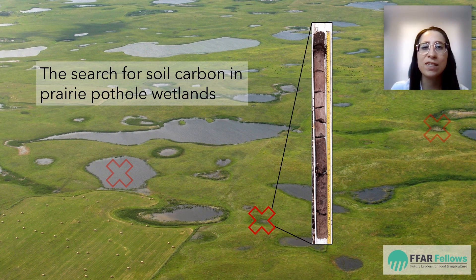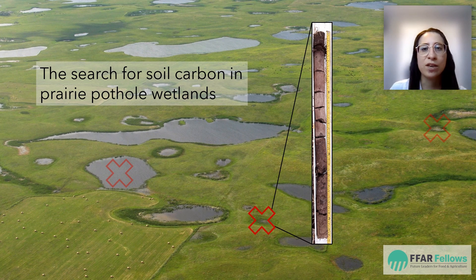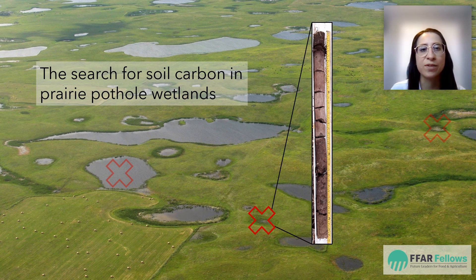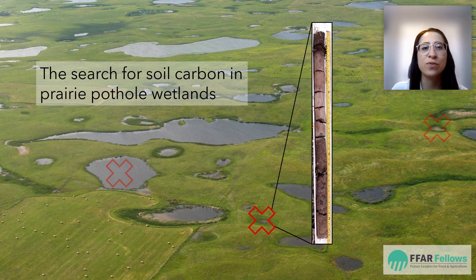You can see in this image the ponds of the prairie pothole wetlands, but there are some wetlands that are hard to spot because this water has dried up. The carbon is still locked away in these wetlands that seem invisible to us standing on the ground.